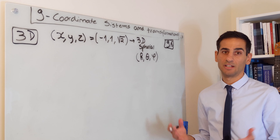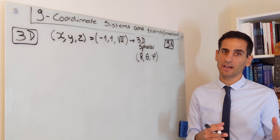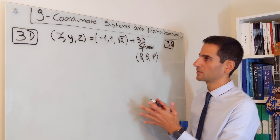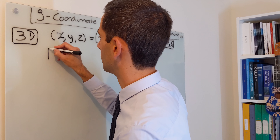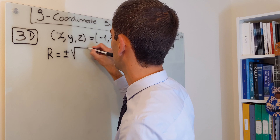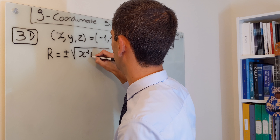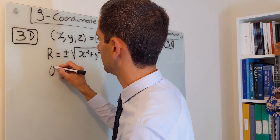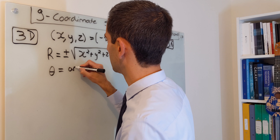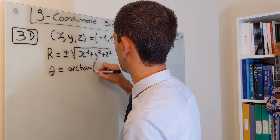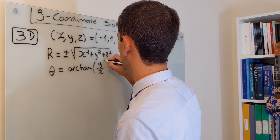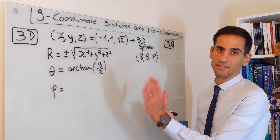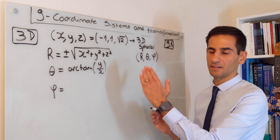Now that you know the coordinate transformations from going from spherical to Cartesian and Cartesian to spherical, let's just test you with a practical example. You can also find this in your lecture notes in section 9.6. The question asks you to go from Cartesian coordinates at x, y, z equal to minus 1, 1, square root of 2, and you want to transform this into 3D spherical.